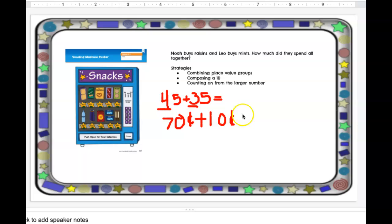So I'm adding 70 cents plus 10 cents. Seven plus one is eight. Eighty. It's in the tens place, so it's 80 cents. And maybe you use this strategy. It's just combining place value groups.